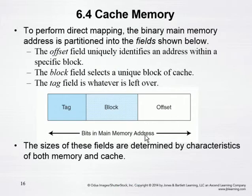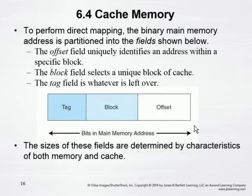Now, we do have to keep track of what is in the memory, and so we need to keep track of the data about where the information is coming from. If we're wanting to access an item in memory and bring it into the cache, we take the address in memory and divide it up into three different parts.